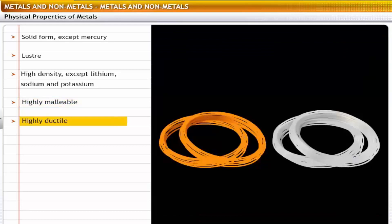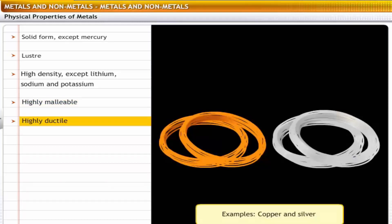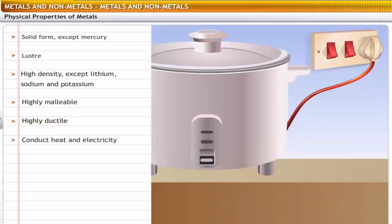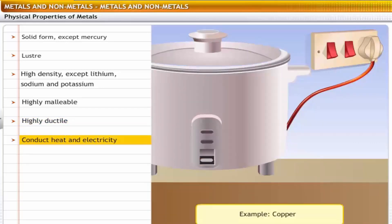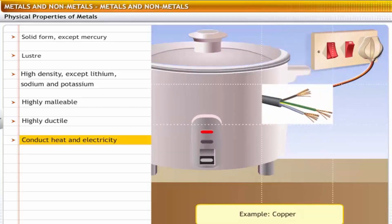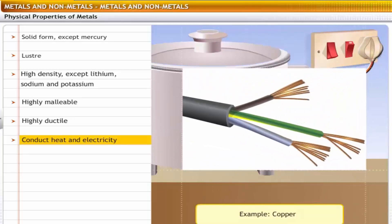Metals are highly ductile and can be drawn into wires. For example, copper and silver can be drawn into thin wires. Metals are also good conductors of heat and electricity; copper wires are commonly used in electrical cables because of this property.